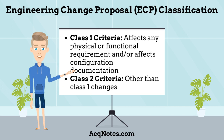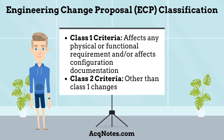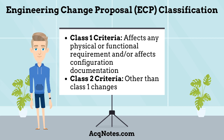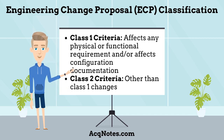What are the Engineering Change Proposal Classifications? There are two types of ECP classifications. Class 1 criteria: an ECP proposing a change to approved configuration documentation for which the government is the configuration authority, or that has been included in the contractor statement of work by the tasking activity, in the following three areas.